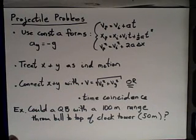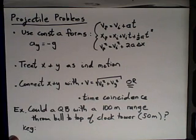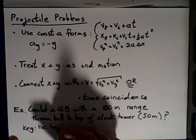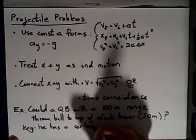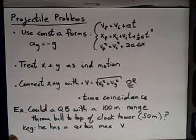Now, hidden in questions like this often are certain key assumptions. And the key in this case is that the velocity is going to be the same, that he has a certain maximum velocity with which he can throw.